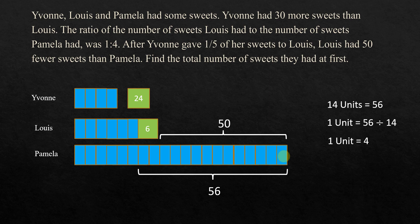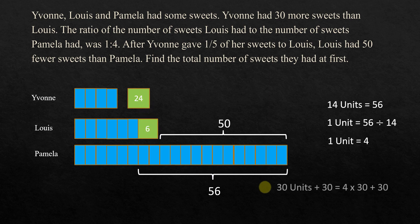So 1 unit is 4. The question asks for the total number of sweets they had at first. Pamela had 20 units. Adding 6 and 4 gives 30 units, plus 24 plus 6 is 30. So 30 units plus 30 equals the total. Since 1 unit is 4, that is 4 times 30 plus 30, which is 120 plus 30, equal to 150. So 150 is the total number of sweets they had at first.